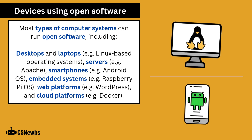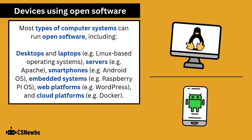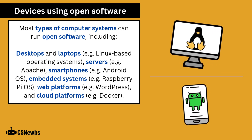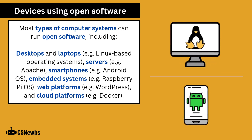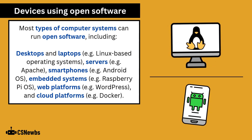Most types of computer systems can run open software, including desktops and laptops, servers, smartphones, embedded systems, web platforms, and cloud platforms.